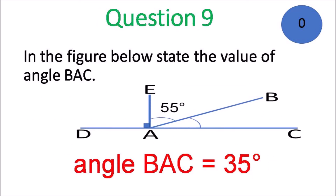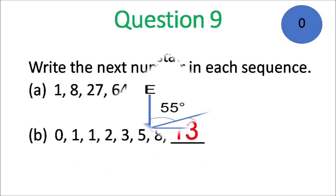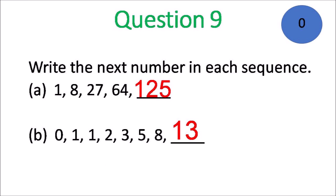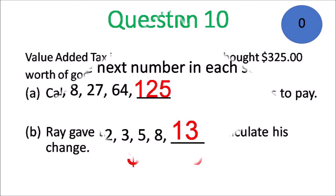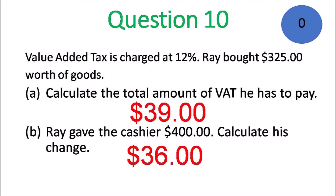Question 9: angle BAC is 35 degrees — 90 take away 55 is 35 degrees. For the sequences, the next number is 125 — those are cube numbers — and you're adding the two numbers to get the number at the back for part B. Question 10: the VAT would be $39, which is 12% of 325, and then the change would be $36.